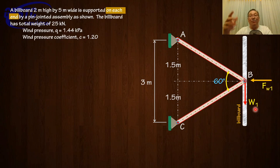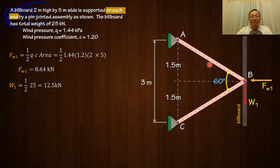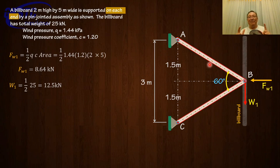The proper solution: do not use the total Fw and W — divide them by two. So Fw1 = one half of the total wind force = 8.64 kilonewtons, and W1 = one half of 25 = 12.5 kilonewtons. I'll also show you another approach: instead of using moments, we can use the two-force member method.